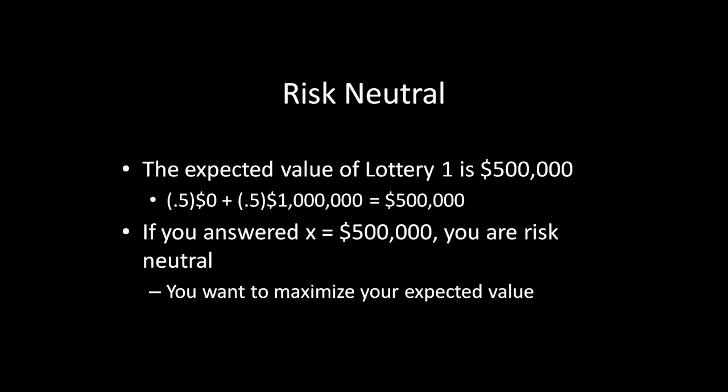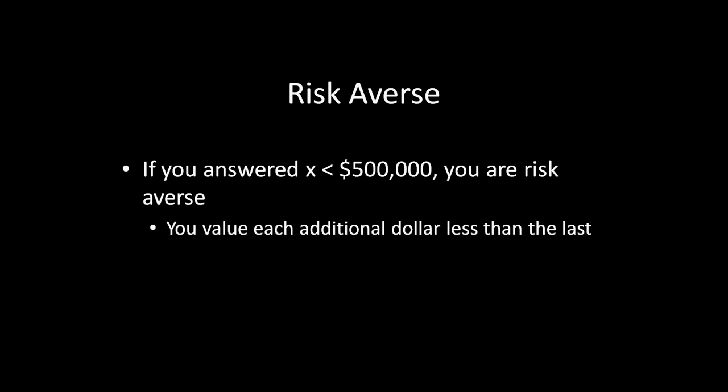Category number 2 is the second most popular category — it's risk averse. If you answered X less than $500,000, you would fall under this category. This means that you value each additional dollar less than the last. This makes a lot of sense. Think about how much your life is going to improve if I give you $1,000 right now, versus how much your life would improve if you already had $10,000,000 and I paid you $1,000. That additional $1,000 really isn't going to help you very much. But if I paid you $1,000,000 right now, assuming you're not already a multimillionaire, I'm probably going to increase your quality of life by a decent amount. This is what risk aversion is picking up on.